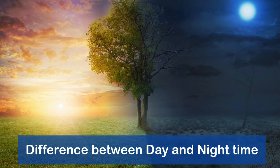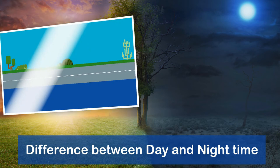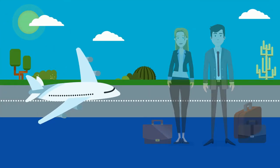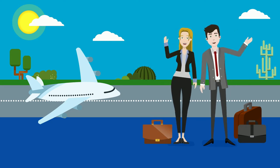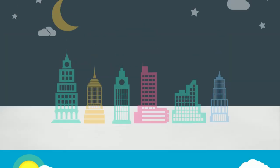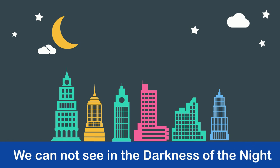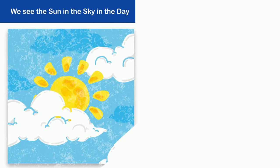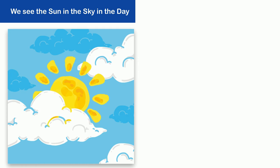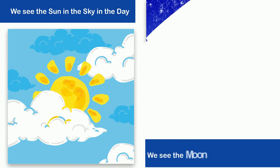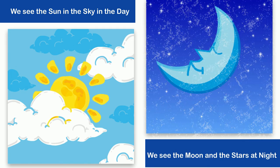It is bright in the day but dark at night. We can easily see everything around us because of daylight. We cannot see in the darkness of the night. We see the sun in the sky in the day, and we see the moon and the stars at night.